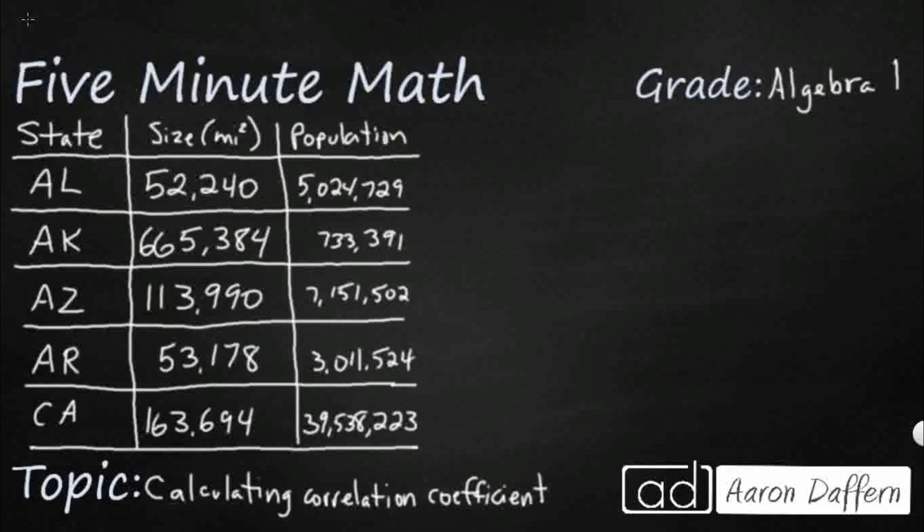I've got the first 5 states in alphabetical order listed here: Alabama, Alaska, Arizona, Arkansas, and California. And let's say I want to see how closely related the size of the state in square miles is to the population.